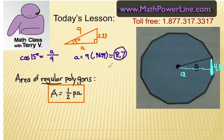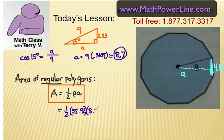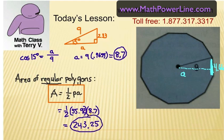Now we plug everything in: Area = one-half × perimeter × apothem = ½ × 55.92 × 8.7. Putting that on the calculator, the final area is 243.25 square units. To summarize for regular polygons: the area is ½PA. You need to know the perimeter and the apothem — sometimes you have to figure both out using the right triangle relationship.